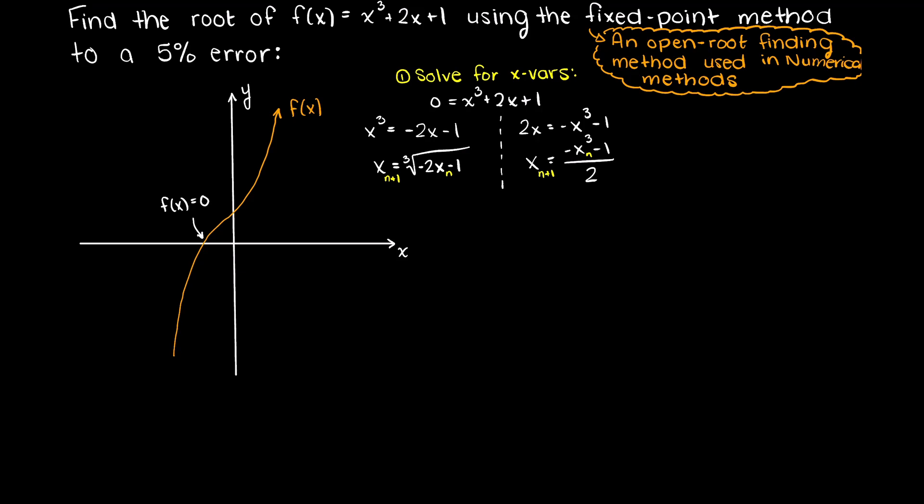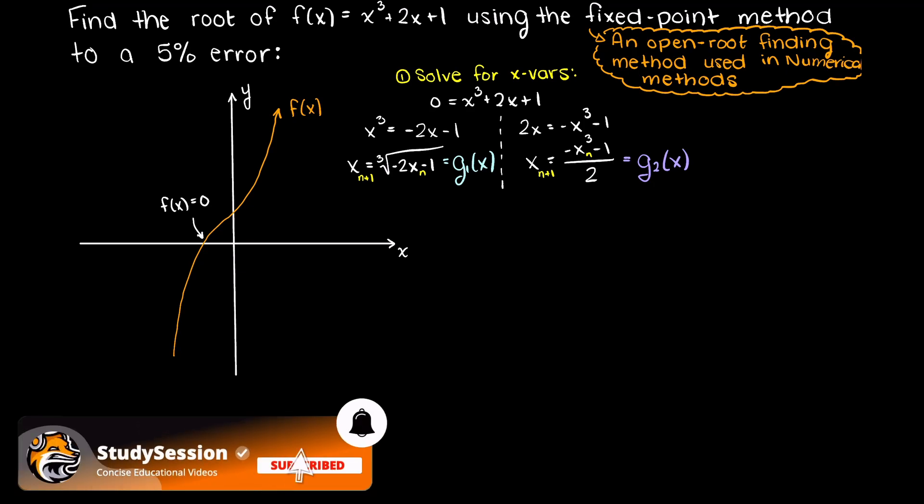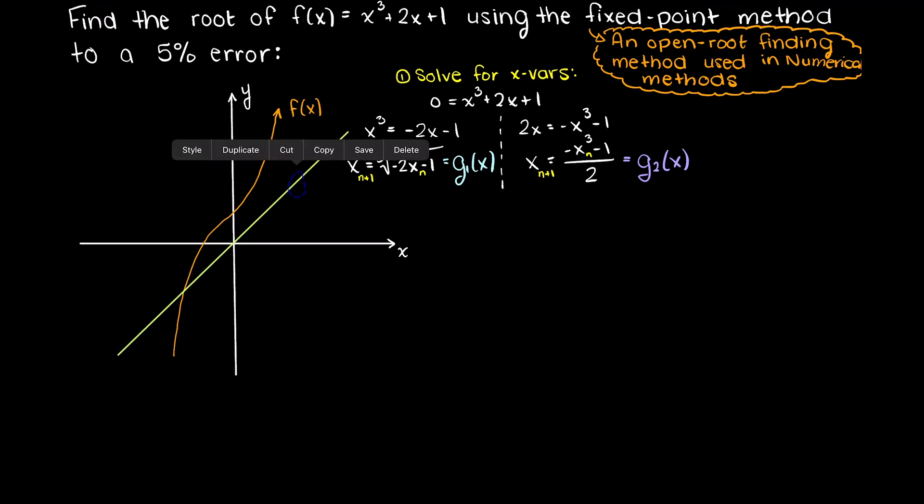With this function, we can create two other functions which we can call g1 and g2. Solving through, we can see that g1 is equal to the cubed root of minus 2x minus 1, and g2 is equal to the negative x cubed minus 1 over 2. So let's also plot g1 and g2 on our graph here.